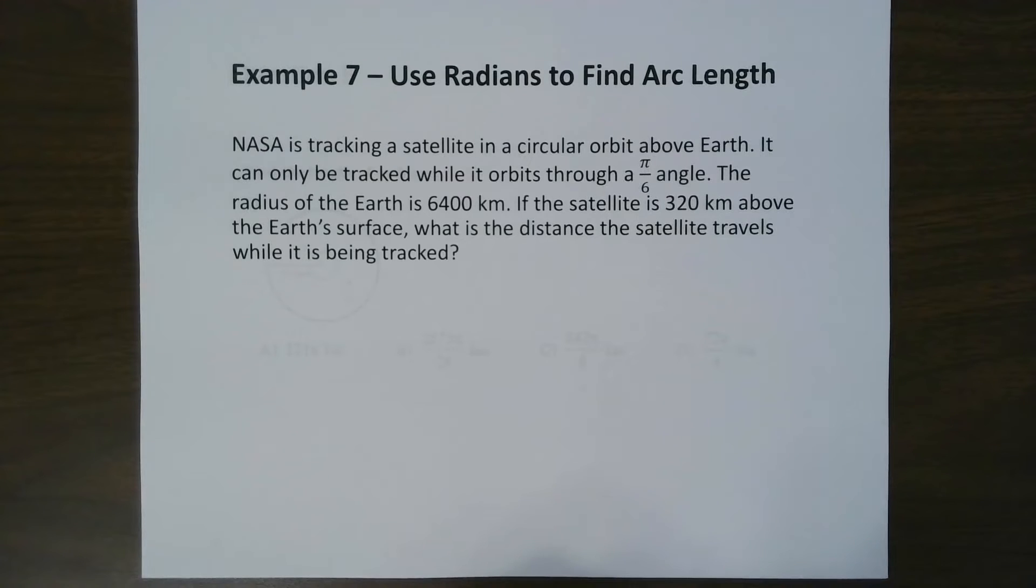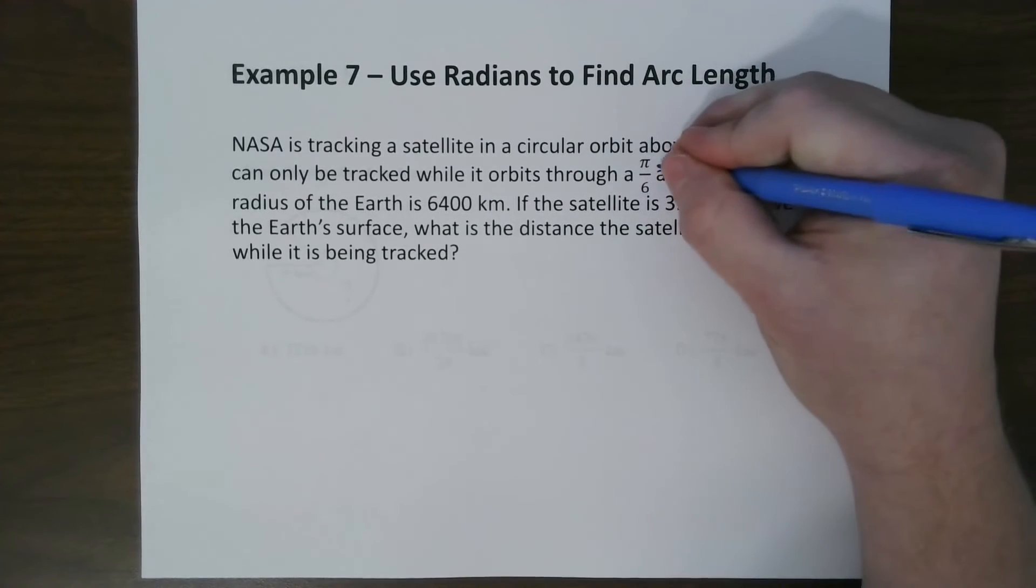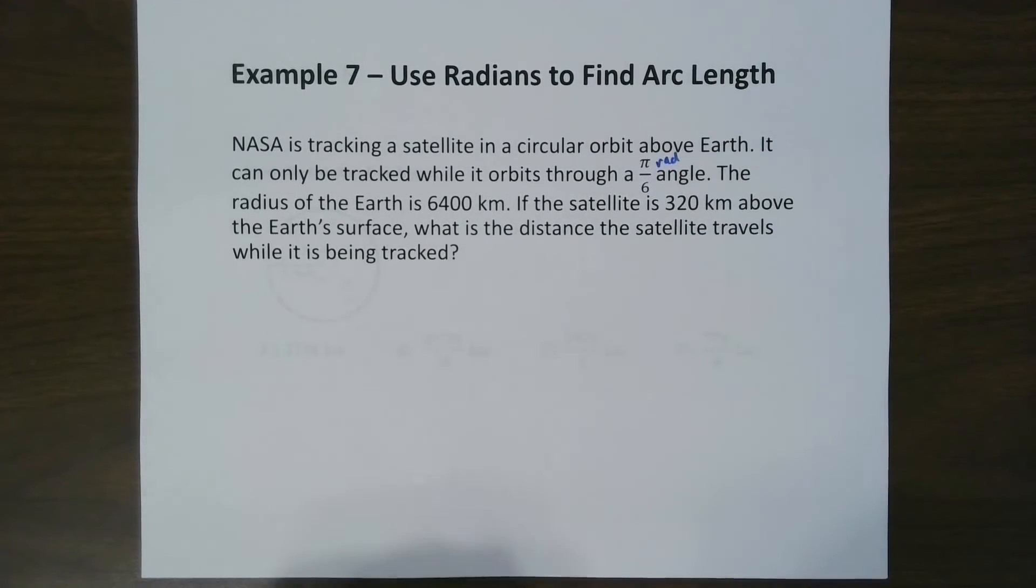All right. So it says NASA is tracking a satellite in a circular orbit above Earth. It can only be tracked while it orbits through an angle of pi over 6 angle. Now since it's a pi over 6, this is radians.